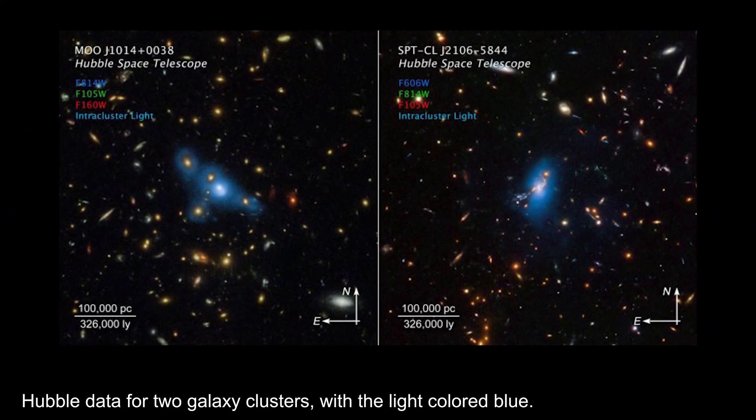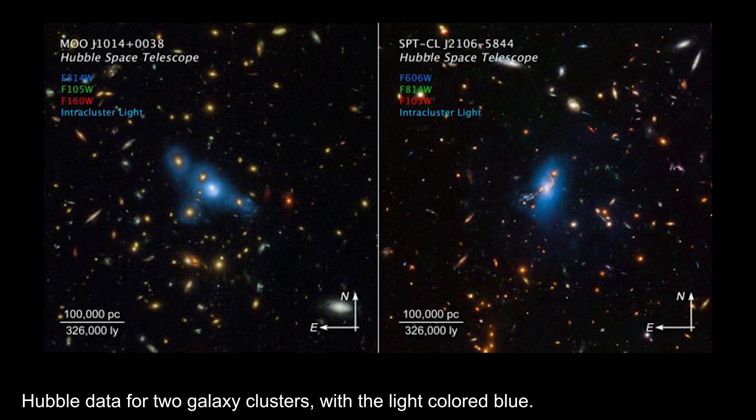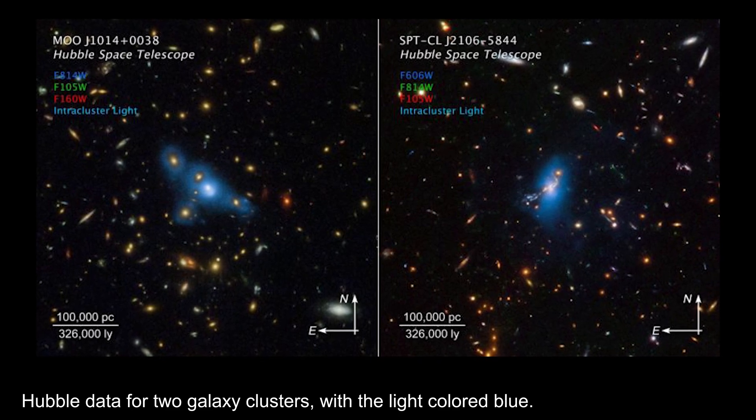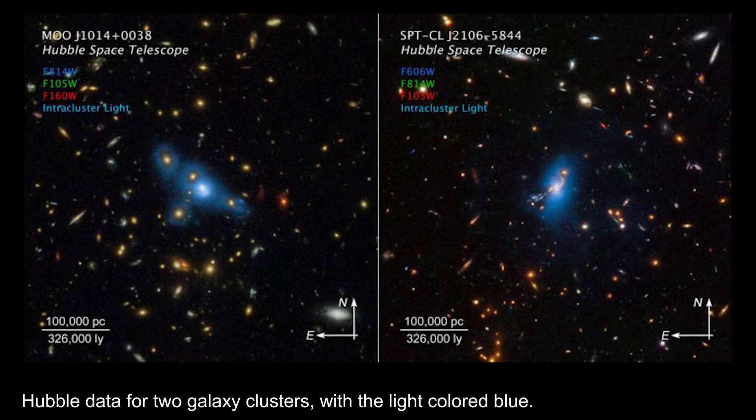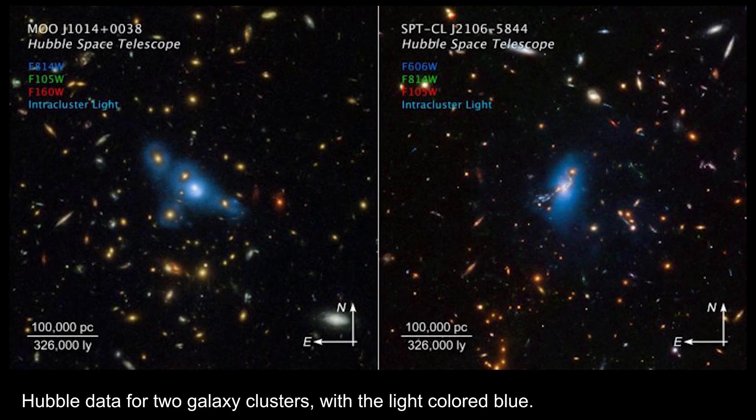The study suggests that the cosmic infrared background may have been caused by the combined light of millions of homeless stars, each about the mass of the Sun. These stars would have formed in the vast, empty spaces between galaxies and would have been too far apart to form clusters.